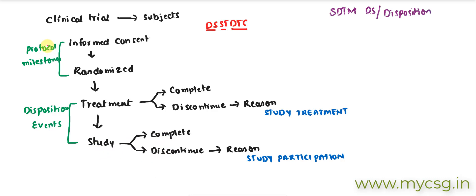The information about whether a particular row belongs to a protocol milestone or is a disposition event is stored in a variable called DSCAT. DSCAT is used to store whether that record is of protocol milestone category or disposition event category.